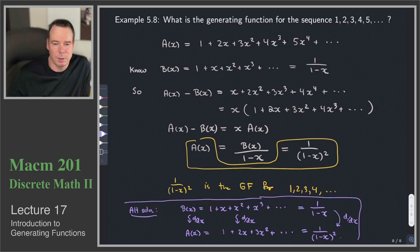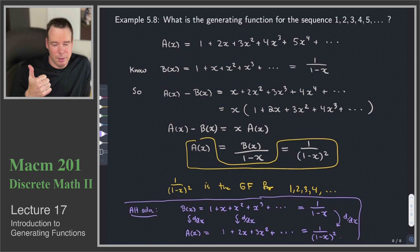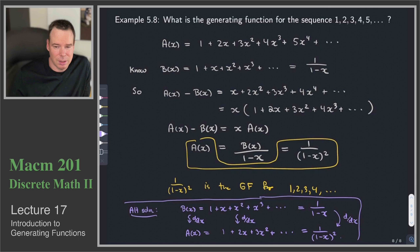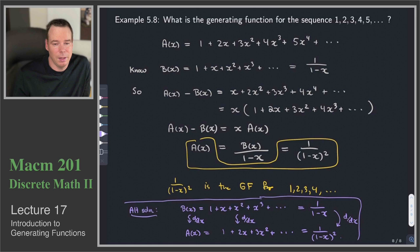To summarize: we introduced polynomials to help with counting by attaching counting meaning to their coefficients, letting algebra do the work for us. Then we said — let's stick counting sequences in as coefficients of infinite series. That infinite series is the generating function. Questions about the sequence can be translated into algebraic questions about the generating function. As we move forward, we'll work on manipulating generating functions to solve counting problems. Thanks very much for watching — see you next time.